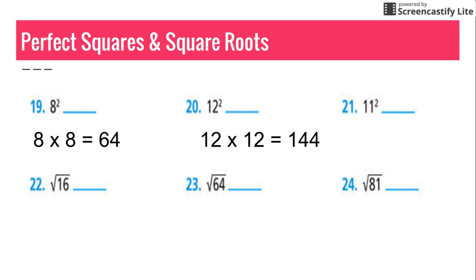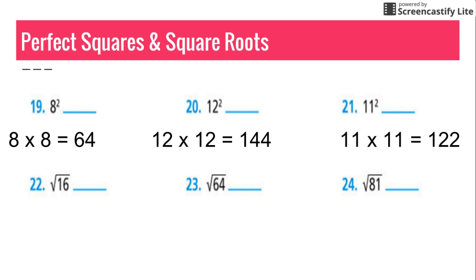And then in 21, we have 11 squared. Simply, again, that exponent means you have 2 of them, so you have 11 times 11, which equals 122.